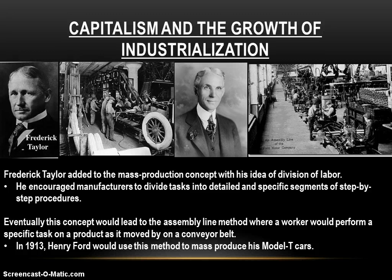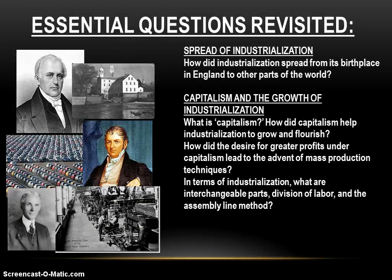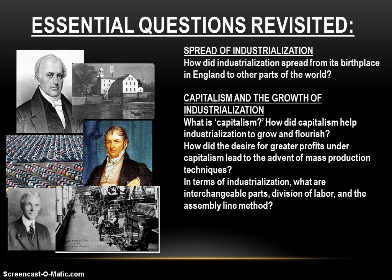Industrialization, through the pursuit of the profit motive and capitalism, has changed the way we produce goods today — whether toys, computers, or cell phones. Mass production and the assembly line method are still the norm, and all of that stems from industrialization and capitalism, from seeking profit in the free market economy. We saw the spread of industrialization from England to the world via Samuel Slater, how capitalism allowed it to grow and flourish, and the growth of mass production through interchangeable parts, division of labor, and the assembly line. Make sure you study those essential questions and be ready to talk about that stuff next time. Until then, farewell.